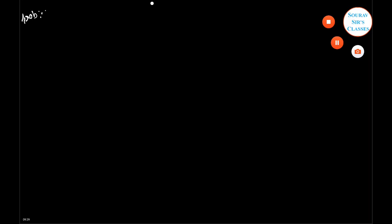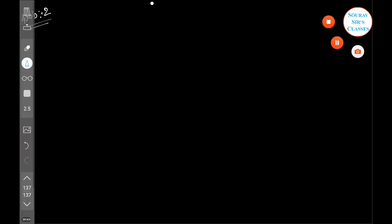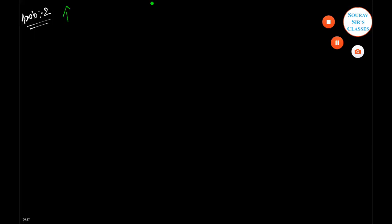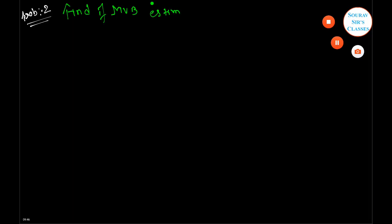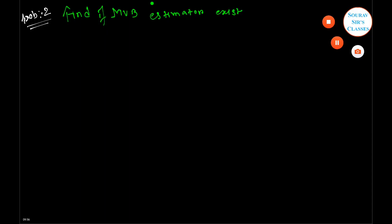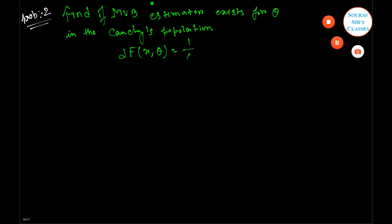Here is problem number 2: Find if an MVB estimator exists for theta in the Cauchy population, where the density f(x; theta) = (1/pi) times 1/(1 + (x minus theta)^2), for minus infinity less than x less than infinity.